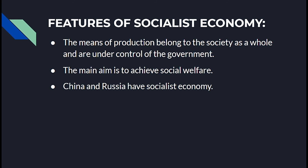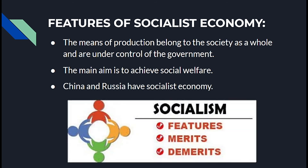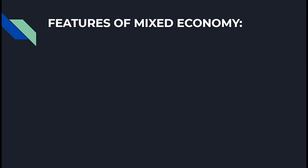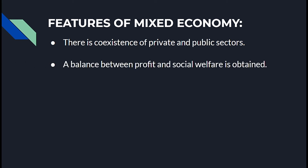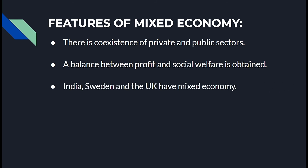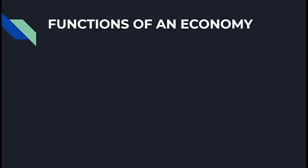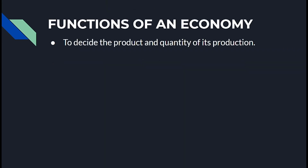China and Russia have a socialist economy. Features of a mixed economy: there is coexistence of private and public sectors, and a balance between profit and social welfare is obtained. India, Sweden, and the UK have a mixed economy.